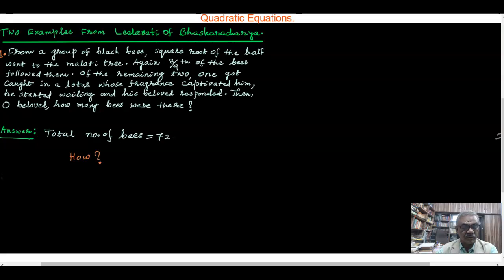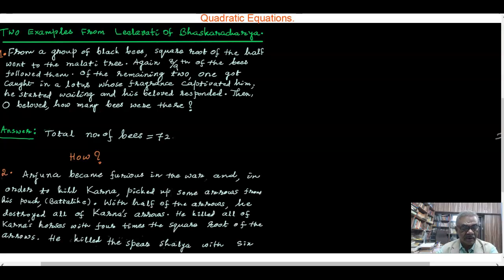The second example: how he got this 72 he constructed a quadratic equation and solved it. Second example: Arjuna became furious in the war and in order to kill Karna picked up some arrows from his pouch. With half of the arrows he destroyed all of Karna's arrows. He killed all of Karna's horses with four times the square root of the arrows.